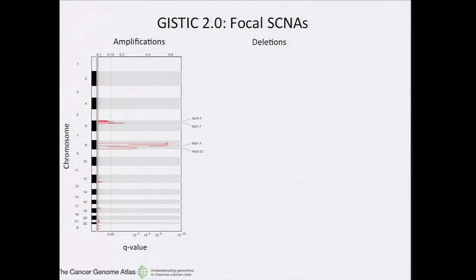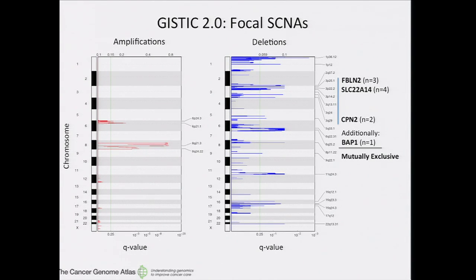There's not much chromosomal instability in uveal melanomas compared to many other solid tumor types. It's been suggested this is because they occur in the eye, which is a very sensitive area, so people tend to catch these tumors early. Also, with only 79 tumors, we don't have a lot of power to detect rare events. The amplification peaks are large and encompassed in arm-level analyses, but there are a couple of interesting deletions specifically on chromosome 3. The ones listed are all exonic and found solely in subtype 2 tumors, causing homozygous deletions, and they're all mutually exclusive, including one additional BAP1 homozygous deletion.